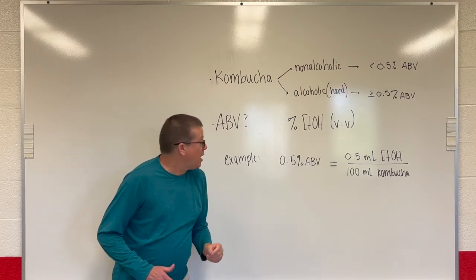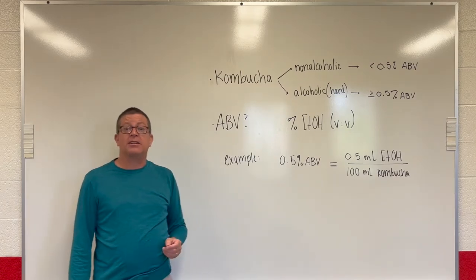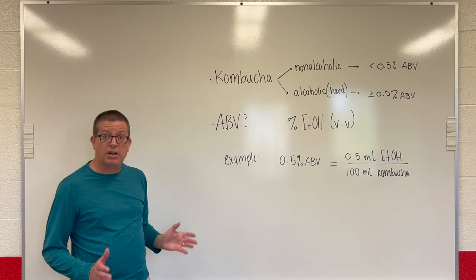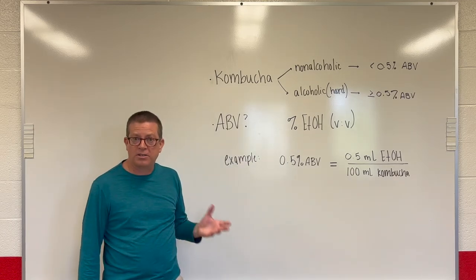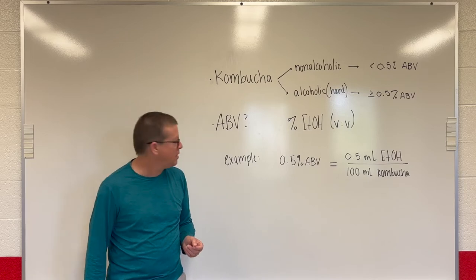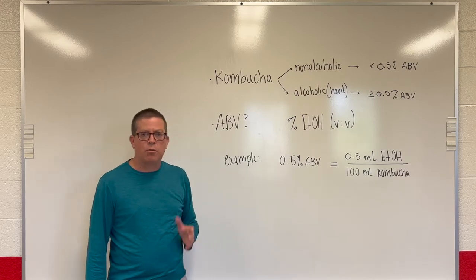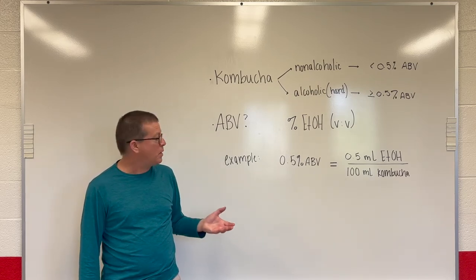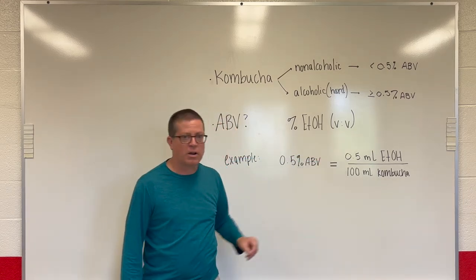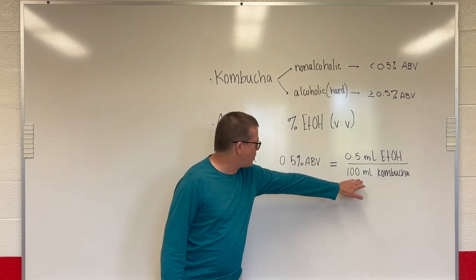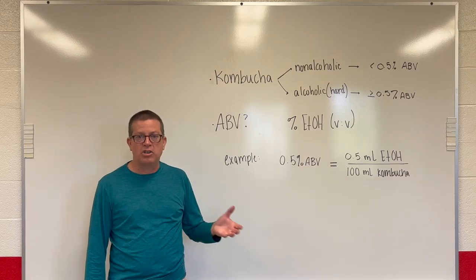What does ABV actually represent? In chemistry, it's a concentration unit — specifically, the percent ethyl alcohol in our beverage expressed as a volume ratio. For example, a kombucha that's 0.5% ABV contains 0.5 milliliters of pure ethyl alcohol per every 100 milliliters of the kombucha product. So it's a volume-to-volume ratio concentration.